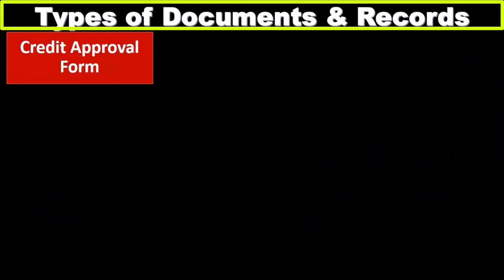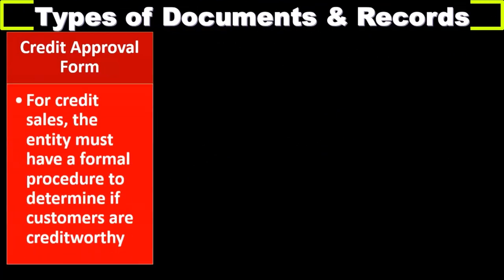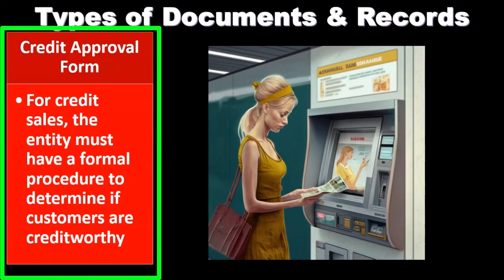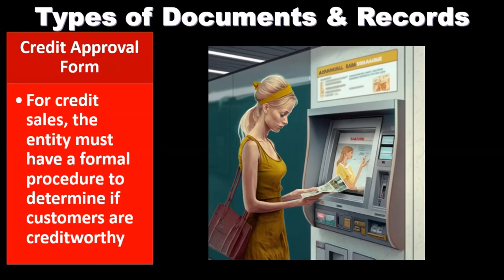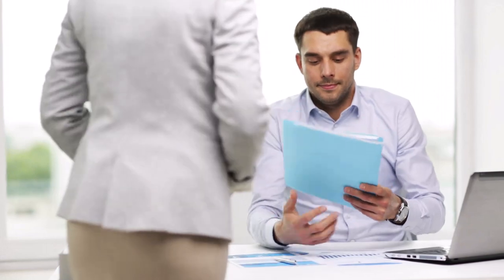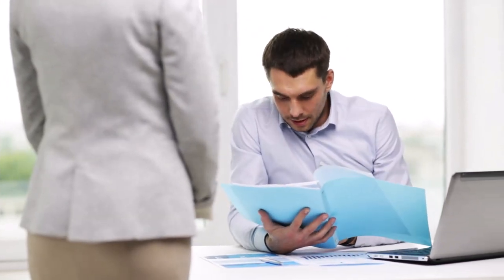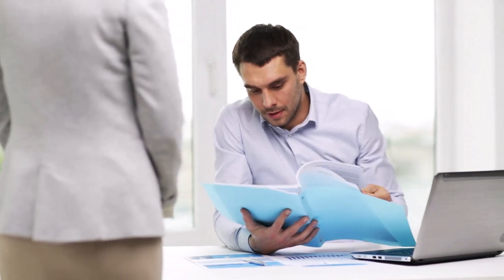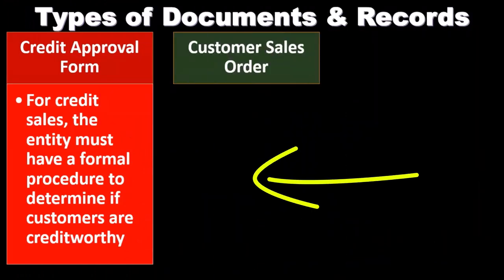The first type of document is the credit approval form, used for credit sales. If we have a sale on credit — where we haven't received cash up front — the entity must have a formal process to determine if customers are credit worthy. Depending on the industry, the sales process may have a high degree of non-payment, so we want to verify that a credit approval process is in place to increase the likelihood that payment will be received.